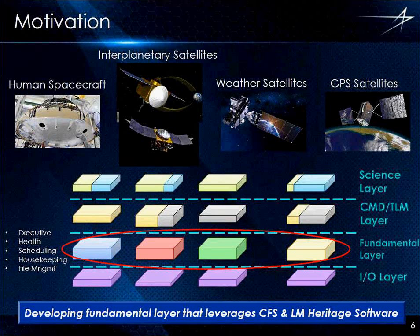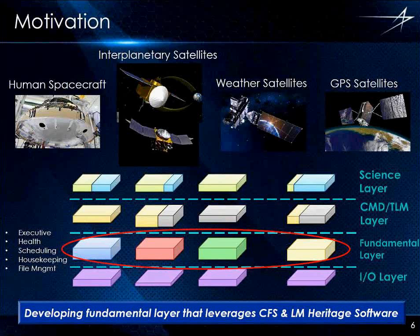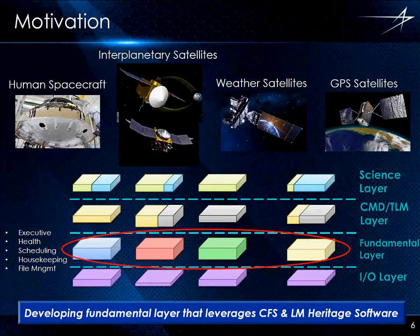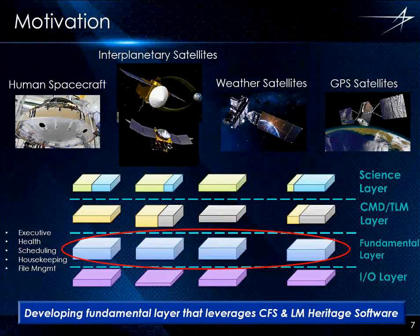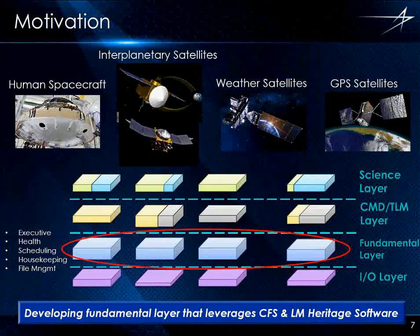We have the management layer and a mission-specific layer up top, which is really mission-need-driven. When we looked at all these satellites, all of these fundamental layers have a slightly different look to them, even though they're all performing the same functionality. What we're trying to do is leverage CFS and also heritage Lockheed Martin software to make all of these blocks have the same look. This year we're really focused on how do we make this fundamental layer common across the space vehicles that Lockheed Martin is building.